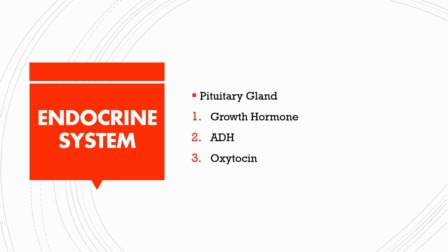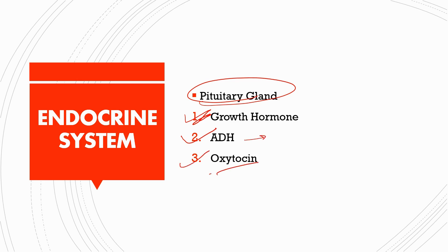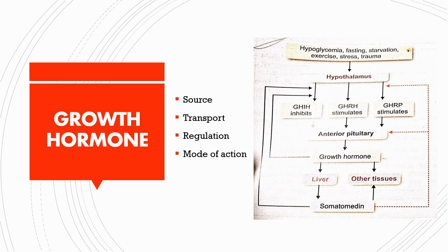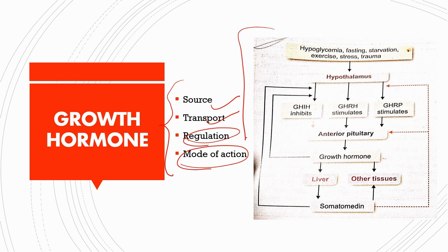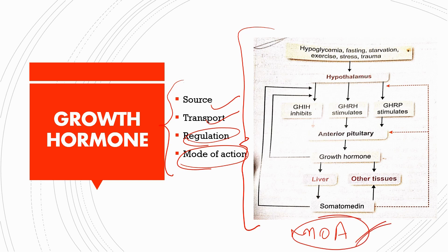Our first topic in today's lecture will be on the endocrine system. In your prof's exam, the most frequently asked question is on the growth hormone. Growth hormone, as you all know, is derived from the pituitary gland. The other hormones include ADH or antidiuretic hormone and oxytocin. For growth hormone, we need to mention its source, transport, regulation, and mode of action. Here is a chart derived from Sembulingam's textbook which mainly represents the mode of action of growth hormone.